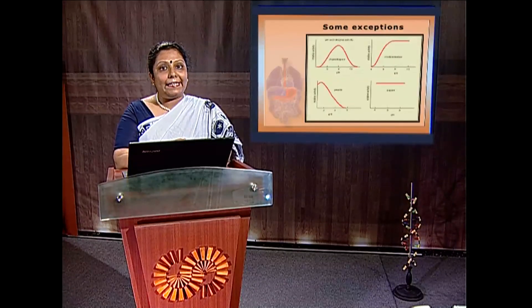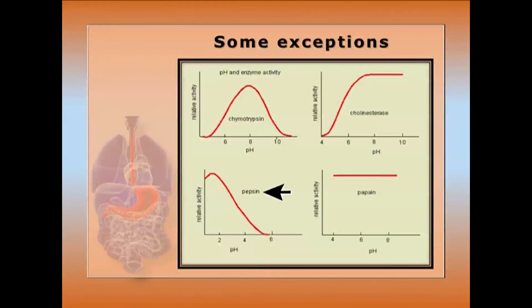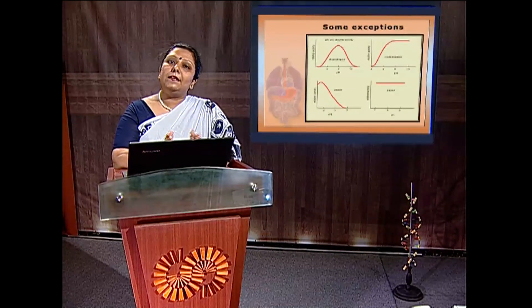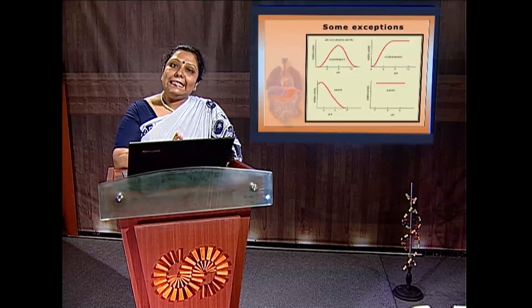Some exceptions: pepsin, confined to the stomach, has a pH optima of 2. Papain, synthesized within papaya, is insensitive to pH change within the range 4–8. Cholinesterase is insensitive to pH within 7–10, but below pH 7 the reaction is sensitive. At the active site, the presence of an ionizable group such as histidine at pH 6 explains this pH sensitivity.